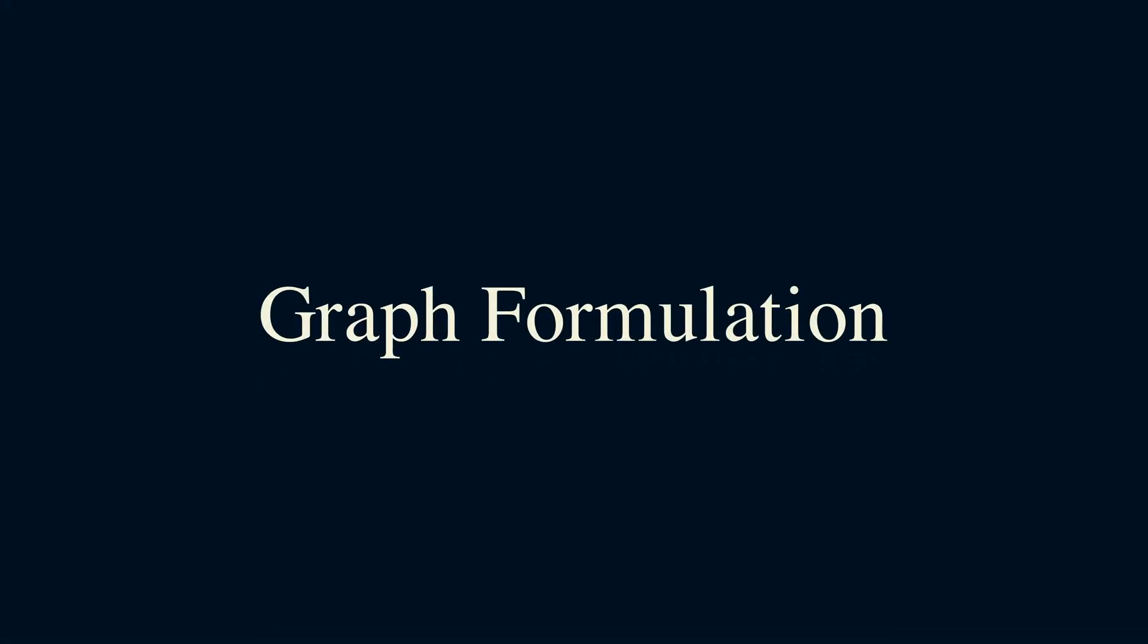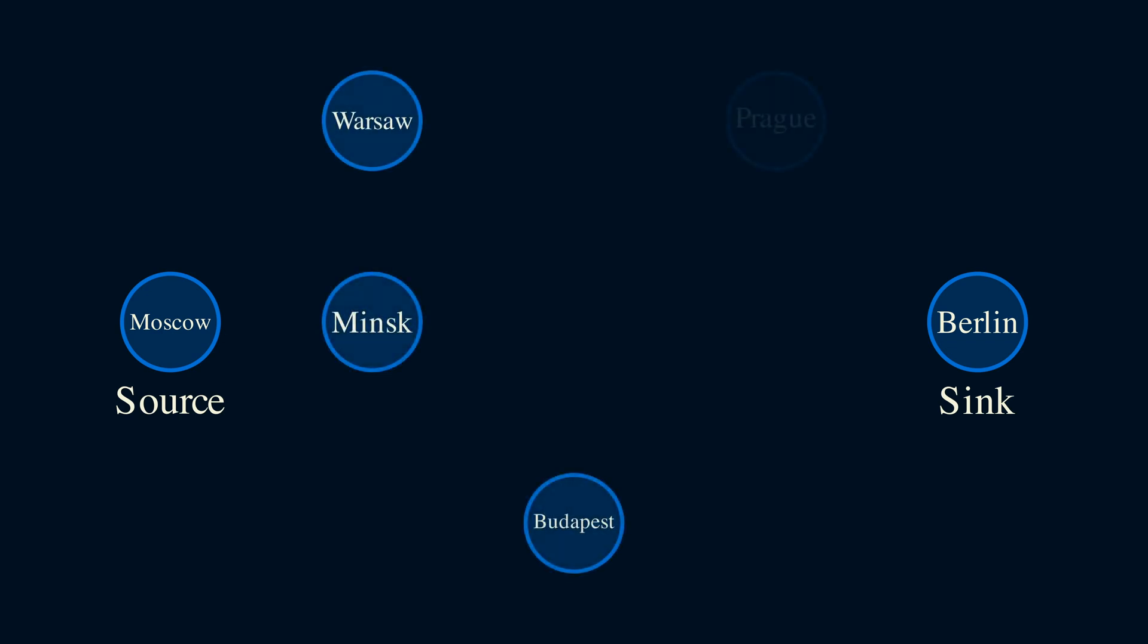Let's start by formulating this problem as a graph. First, there are two special vertices. One vertex is called the source, and it's where the trains are coming from. To keep things concrete, let's say the source is a city, like Moscow. And the city that we want to send trains to is called the sink. Let's say this is Berlin. We can represent the other cities as vertices as well. Suppose we have Warsaw, Minsk, Budapest, Prague, and Vienna.